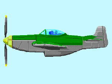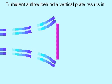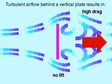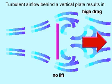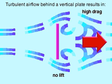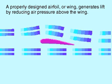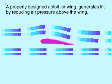Airplanes are designed around wings, and wings are designed according to the rules of aerodynamics. If a vertical plate is subjected to fast-moving air, a turbulent and chaotic airflow will occur as air passes by. But if this plate is rotated toward the direction of the airflow and turned into an airfoil,